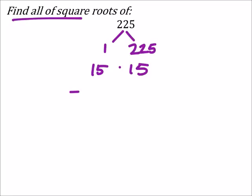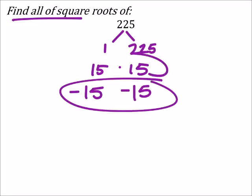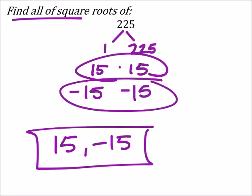So since it wants all the square roots, let's also use the negatives of these. There's a pair of numbers that are the same being multiplied together that are factors of 225, and so we list them out. 15 and negative 15 would be our answer here.